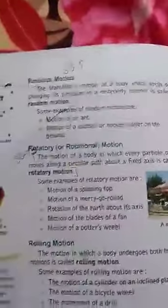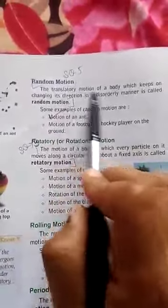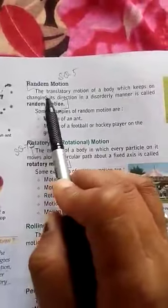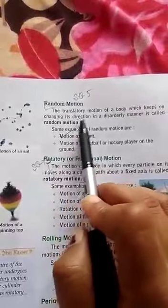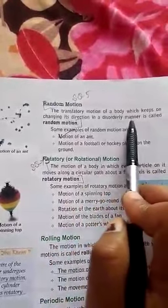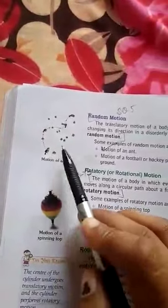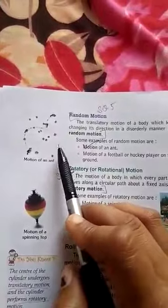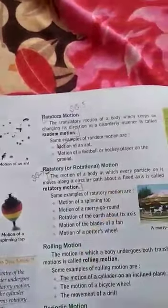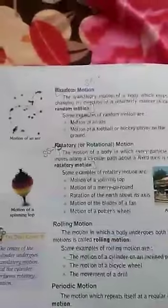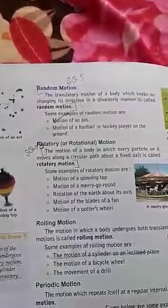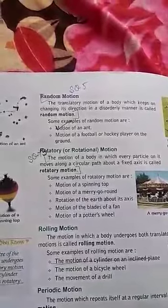The next type of translatory motion is random motion. This is when a body is moving in a random path, changing its direction in a disorderly manner. Examples include the motion of an ant or a housefly moving in a disorderly manner. When a body is moving and changing its direction in a disorderly manner, that is called random motion.